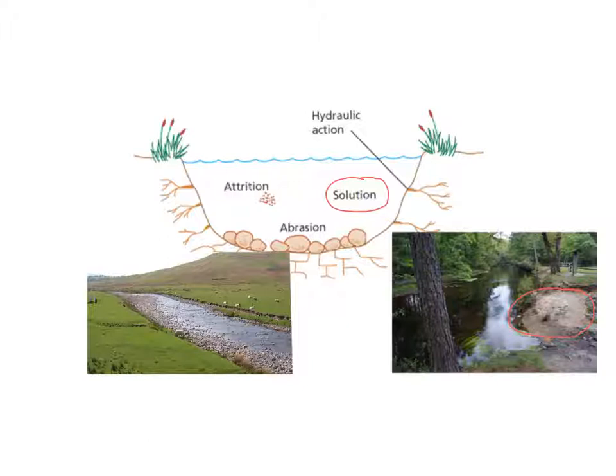The next process is abrasion, sometimes called corrasion. This relates to the bed load found on the river bed - pebbles, boulders, or load carried within the river itself. This involves the bed load scraping against the river banks or riverbed.